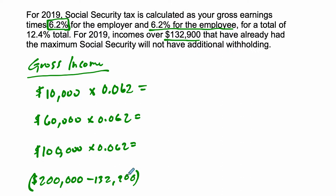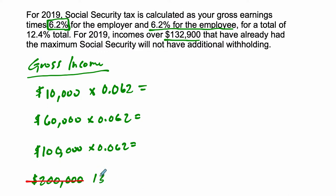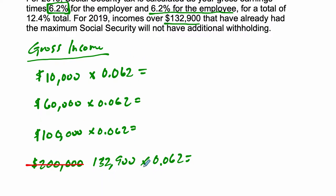We're only going to tax on $132,900 and below. So actually, maybe the easiest way of doing this is to realize that anything over $132,900 there is no Social Security tax. So it's just going to be that maximum: $132,900 times 0.062. If you have an income over this cap level, just take $132,900 and multiply it by 0.062 and you're done.